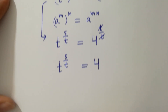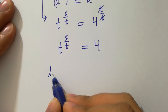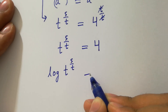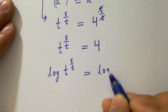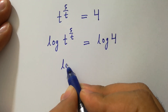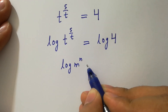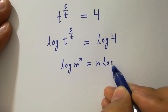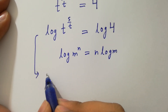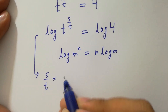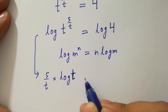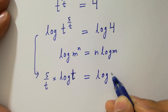Now take log on both sides. Since log m to the power n equals n log m, we have 5 over t times log t equals log 4.